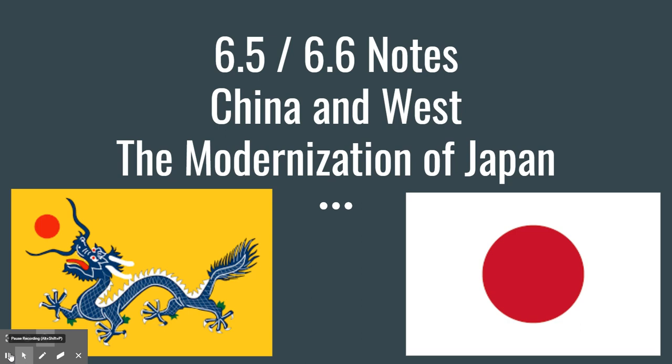Today's lecture is going to focus on both 6.5 and 6.6. We're going to talk about China and Japan together, because both nations start off in a similar place where they get taken advantage of by the West, but they take two radically different routes to fix those problems. We'll talk about one empire that rises and one that collapses.